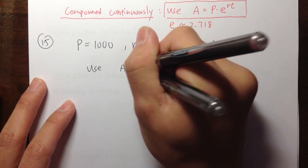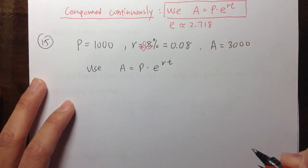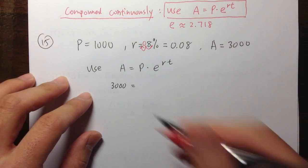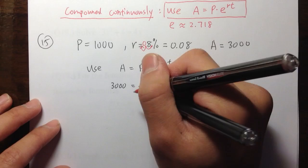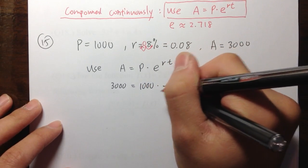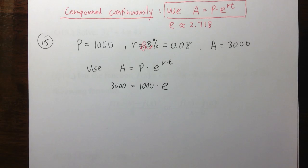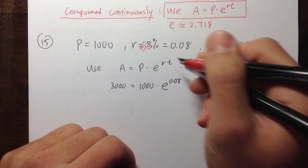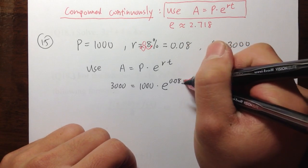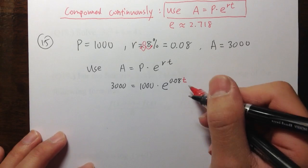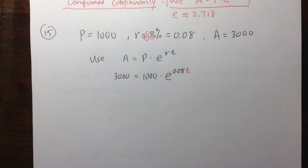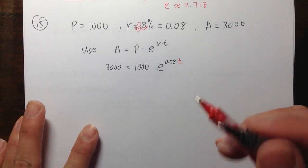Now we plug everything into the formula: A equals P times e to the rt power. Substituting: three thousand equals one thousand times e to the 0.08t power. The variable T — the number of years — is what we are solving for, and it sits in the exponent.